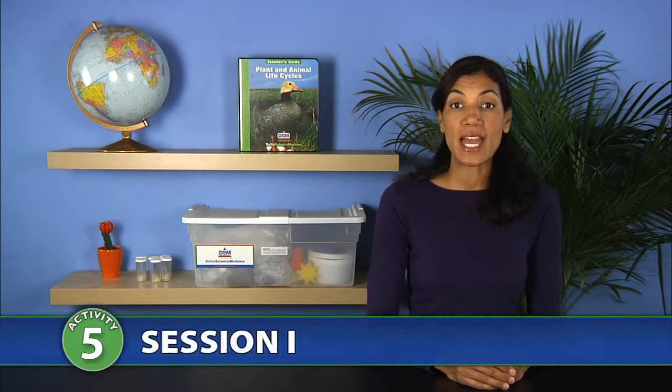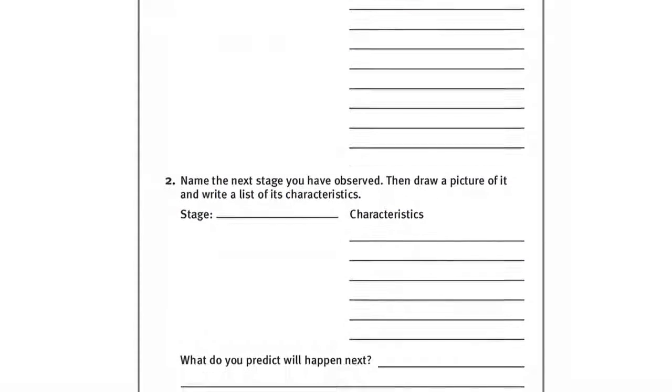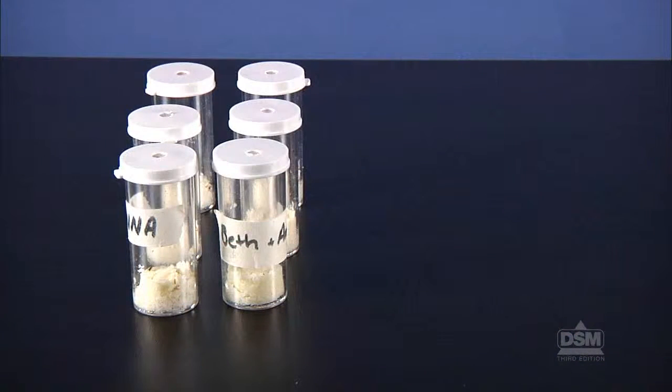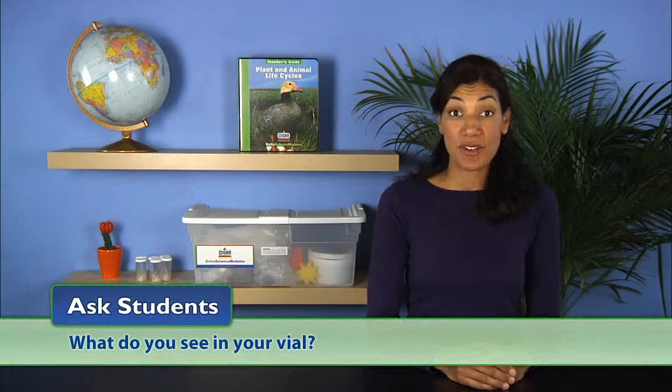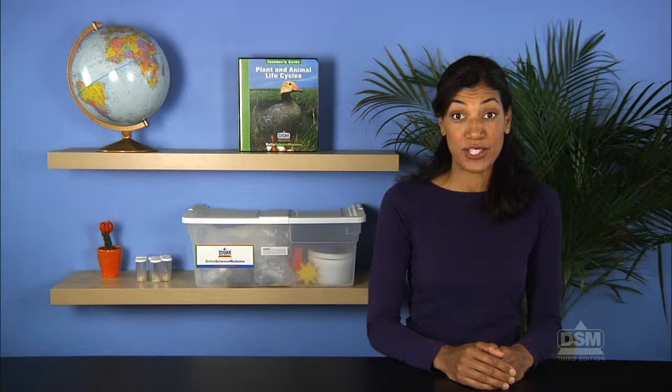To begin Session 1, distribute Activity Sheet 5 Part A to each student, and instruct teams of two to retrieve their fruit fly vials and a magnifier. Ask students, what do you see in your vial? Instruct students to examine and compare different vials and take note of any changes that have occurred.